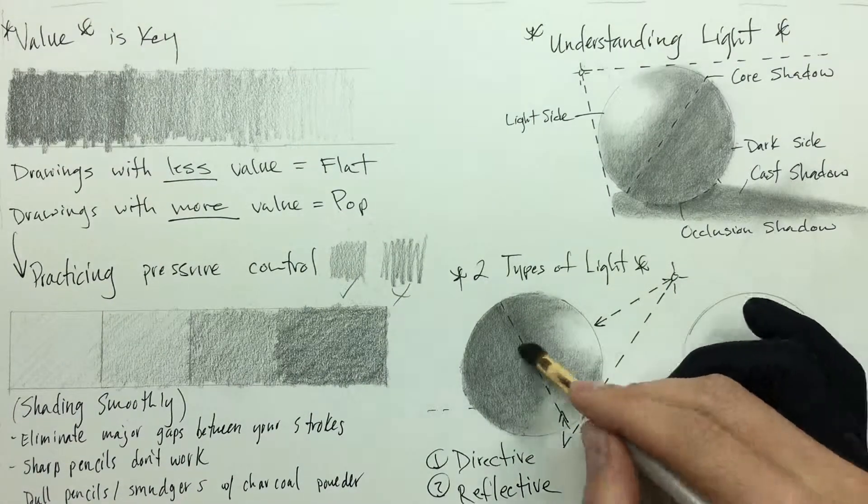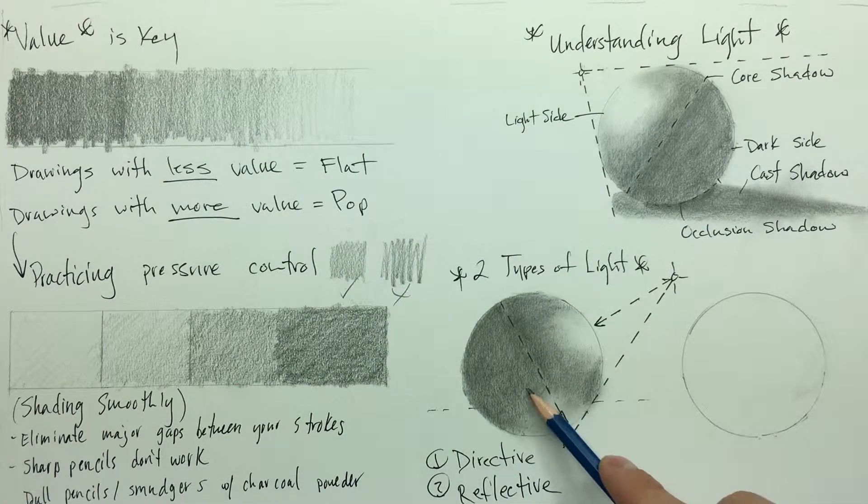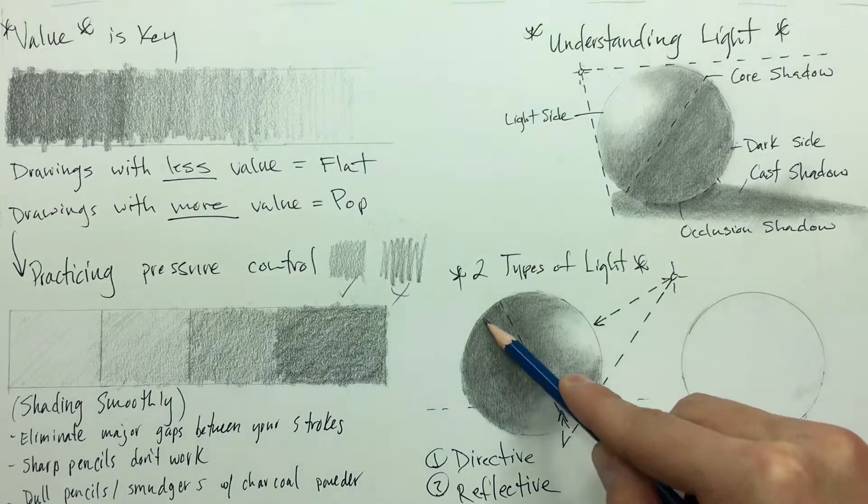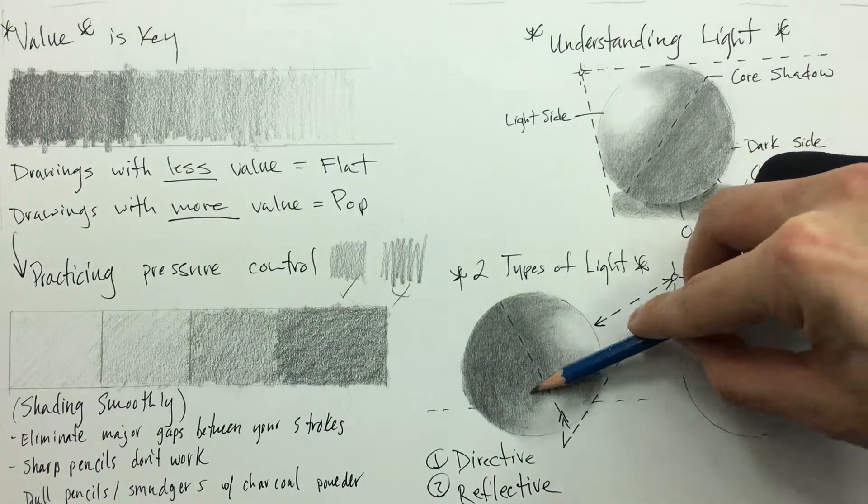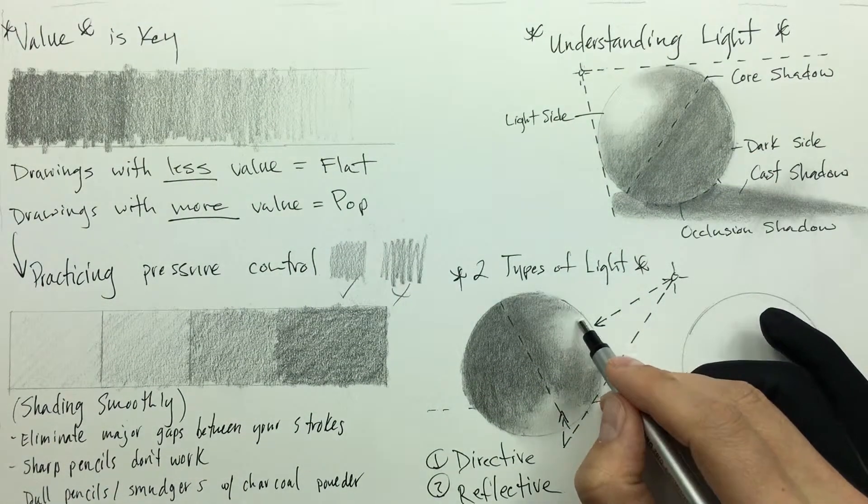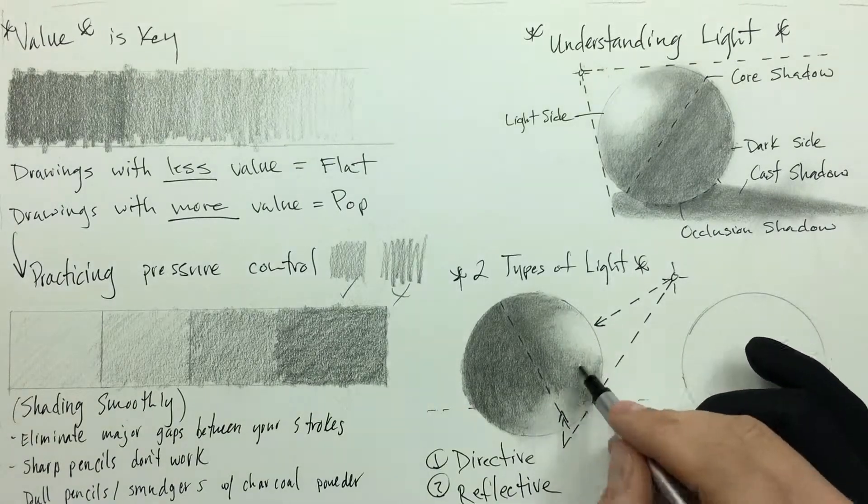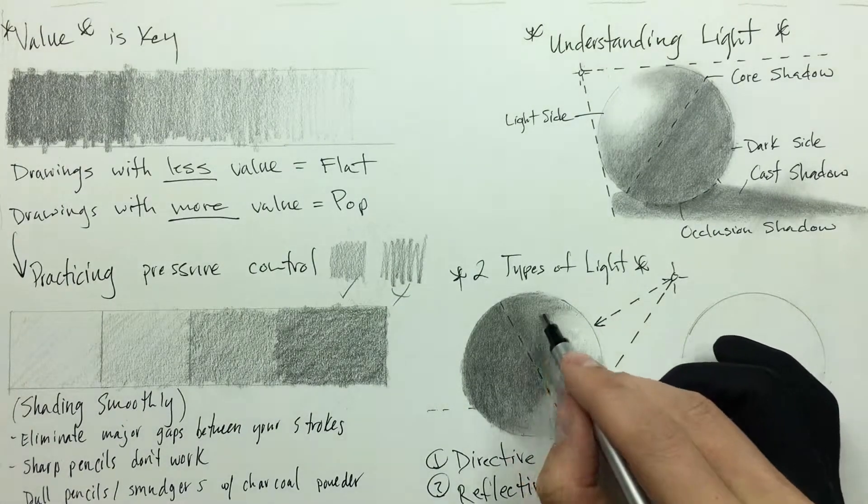But here if you soften it up and you still don't like what it looks like, you can always add more graphite. Then I'm going to take my mono zero—this is one of my favorites—and I'm just going to give it a different texture from the first sphere.